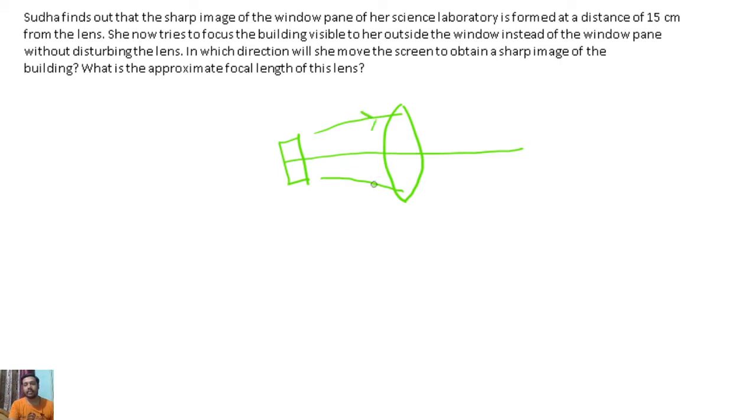So, the rays of light are diverging. Diverging rays of light will converge to form a sharp image. Okay? So, the screen is here. Now, this is the window pane. Now, what is the other case? The other case is a tall building which is outside.